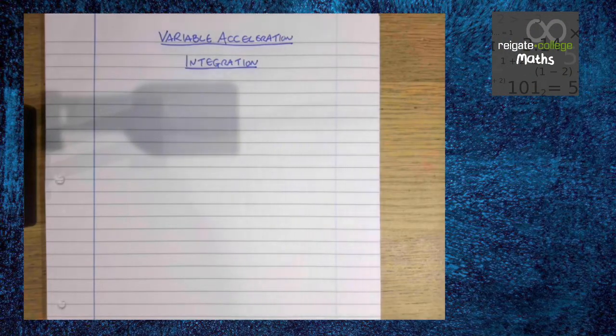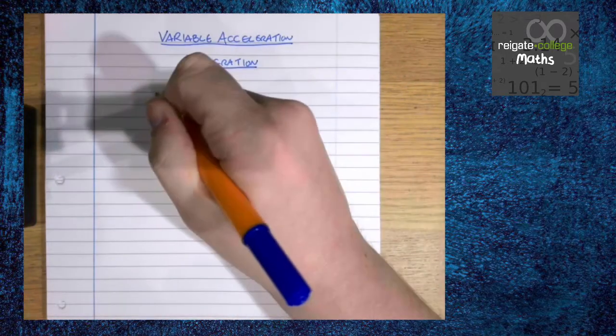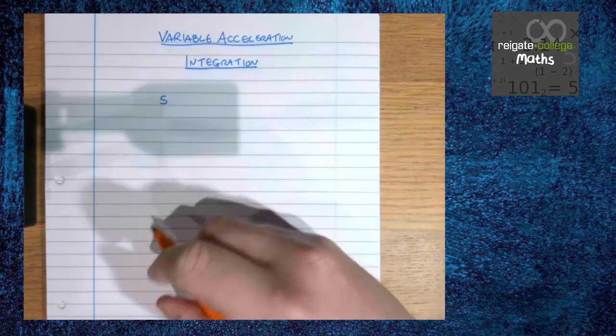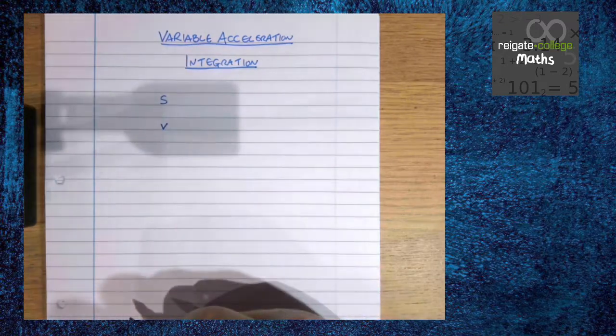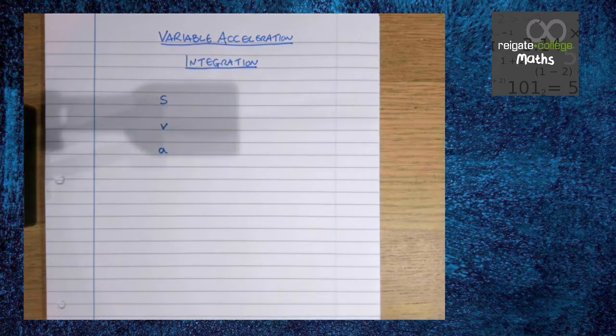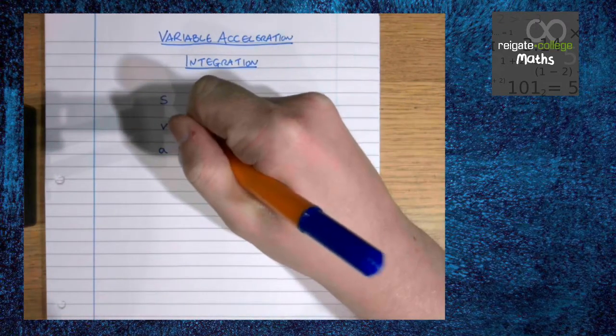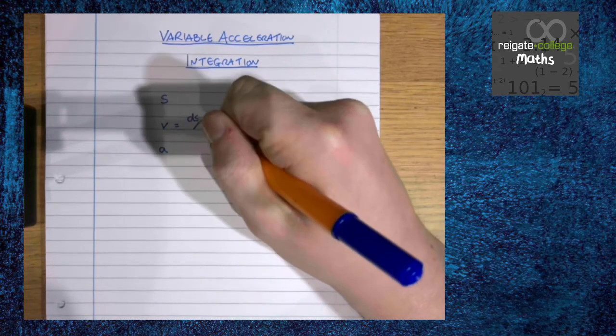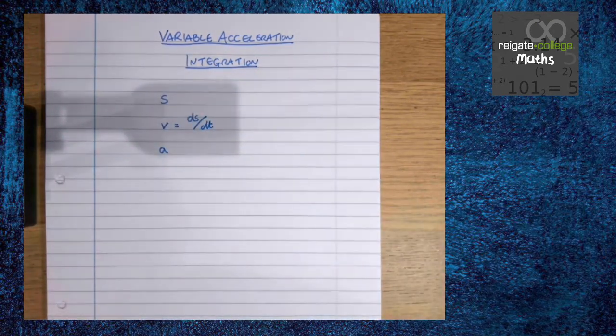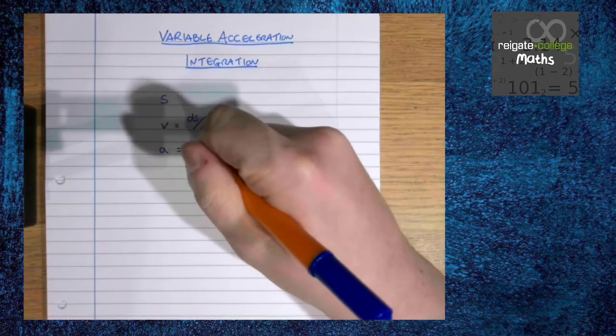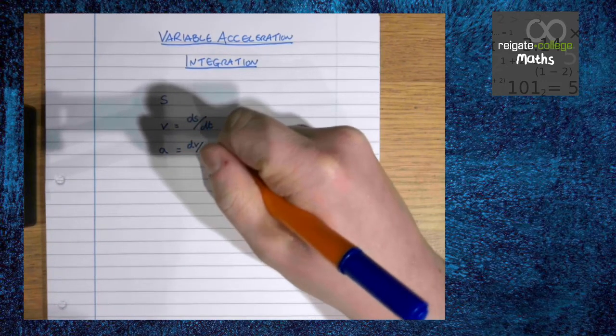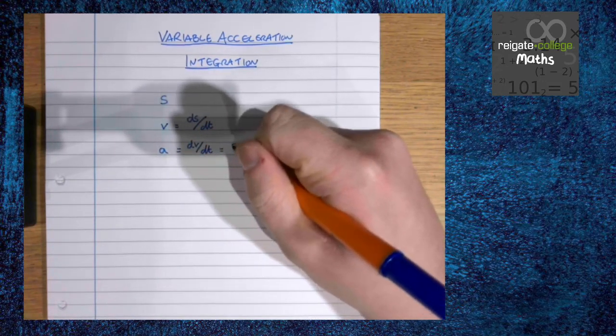In the previous video looking at differentiation we saw that there was a link between displacement, velocity and acceleration. The link being that if we differentiate displacement we get velocity and then if we differentiate velocity we get acceleration.